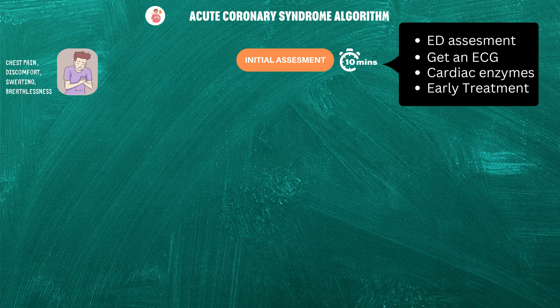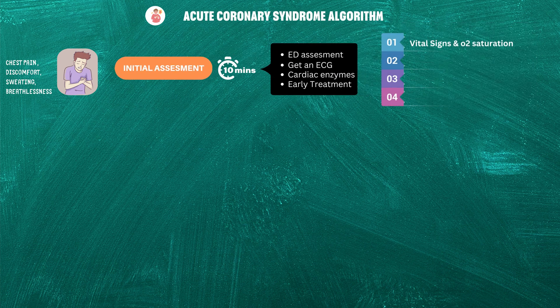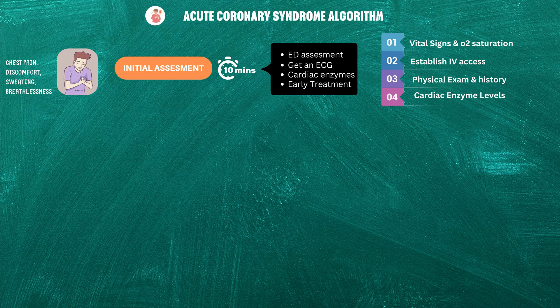Here are the steps we should take during these initial 10 minutes. Step 1: check vital signs and evaluate the need for oxygenation. Step 2: establish IV access. Next, perform a brief targeted history with a physical exam. And finally, step 4 is to obtain the initial cardiac marker level.